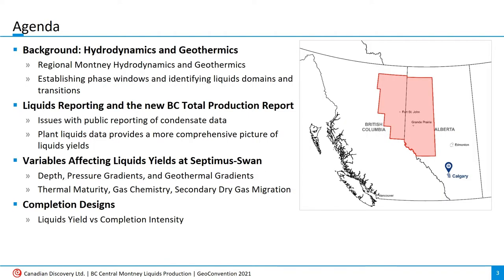We will begin by providing some background information on regional hydrodynamics trends in the Montney, and describing how temperature, pressure, thermal maturity, and gas chemistry are related to phase boundaries and liquids production. Then we'll discuss some issues with condensate reporting in the public data, and how the new BC Total Production report solves this issue by providing plant liquids allocated back to producing wells. Then we'll investigate the main variables that affect liquids production in the BC Montney from Septimus to Swan, and see which variables are most relevant in different plays within the study area. And finally, we will be looking at completion designs to test whether higher completion intensities result in higher liquids yields, and whether operators use different stimulations in the liquids-rich areas compared to the drier areas.